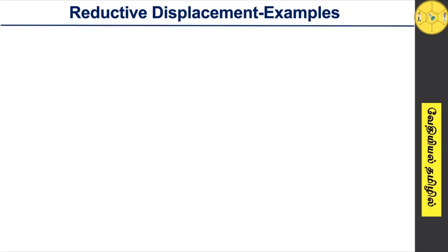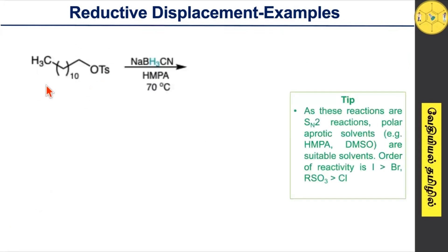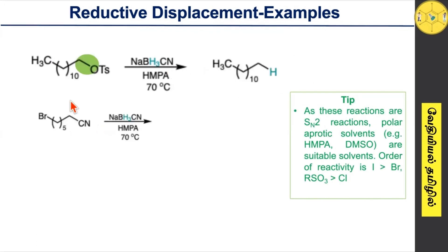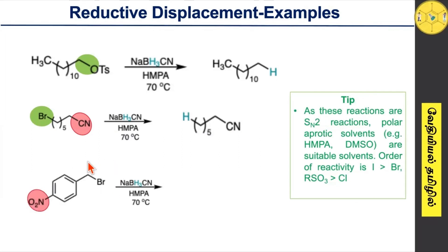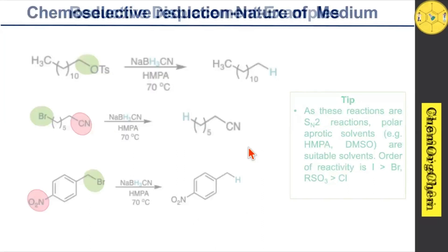Let's move on to some more examples. This compound contains phosphate groups; under these conditions you get the corresponding hydrocarbon product. Consider this example: this compound contains a bromo group as well as a nitrile. Under these conditions, the nitrile group is unaffected and only the bromo group is replaced by a hydride source. Here is another example with a nitro group and a bromo group — these conditions selectively reduce the carbon bearing the bromo group, giving the corresponding compound.